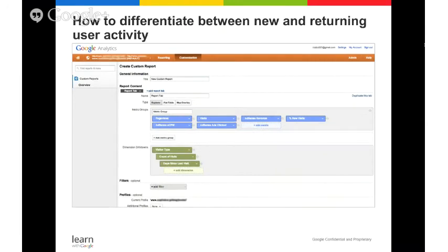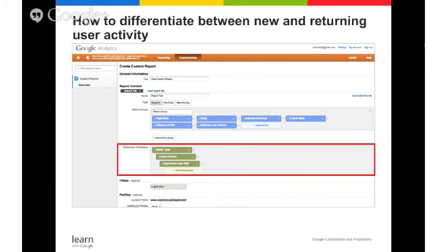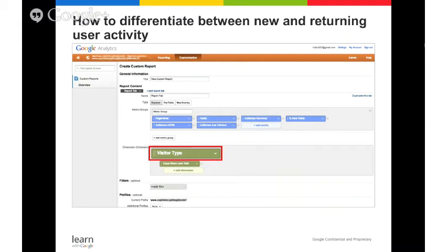You can also use custom reports to identify how site activity and performance differs between new users and returning visitors. How new and returning visitors respond to your site can depend on things like site design and content — a topic we'll cover next week in User Experience. To do this, select Visitor Type in the Dimension Drilldown. You can then see two rows: one for new users and one for repeaters, showing differences in AdSense revenue, number of ads clicked, eCPM, and other metrics. For example, if eCPM for repeaters is 50% higher than new users, you may want to focus on their needs and create content for them.